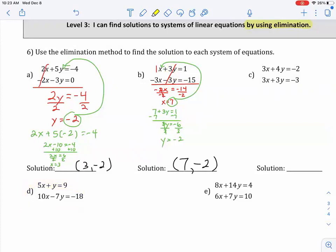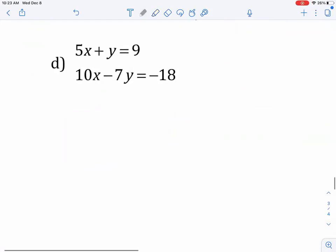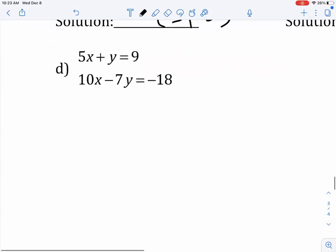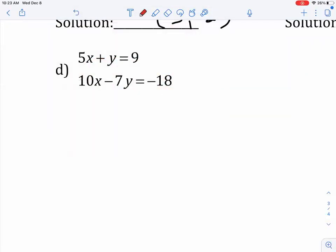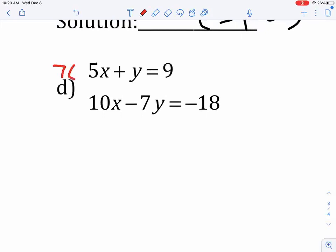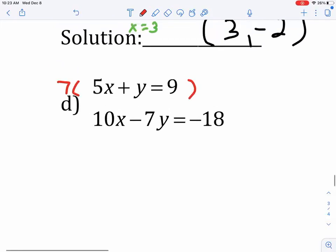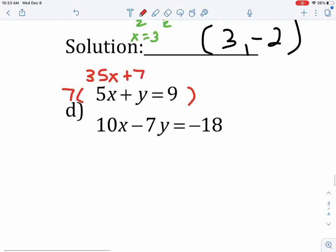D is a little bit different. Because if I add them down, the Xs don't cancel, and the Ys don't cancel. So, I can't just add them down right away. I really wish this was a 7Y, but I can't just change that problem because I want to. But what I can do is I can multiply everything on the top equation by 7, which is going to make that top equation 35X plus 7Y equals 63.